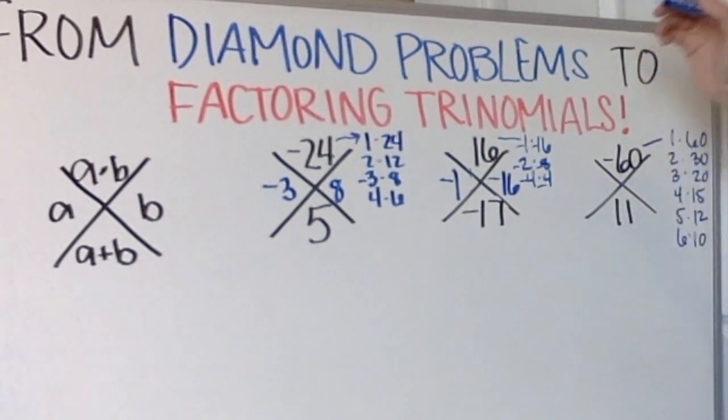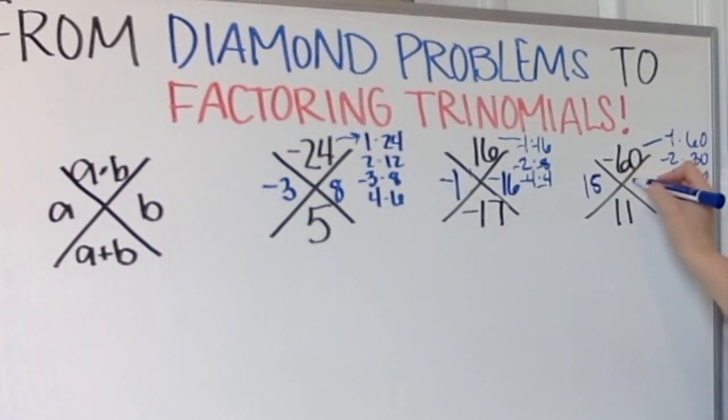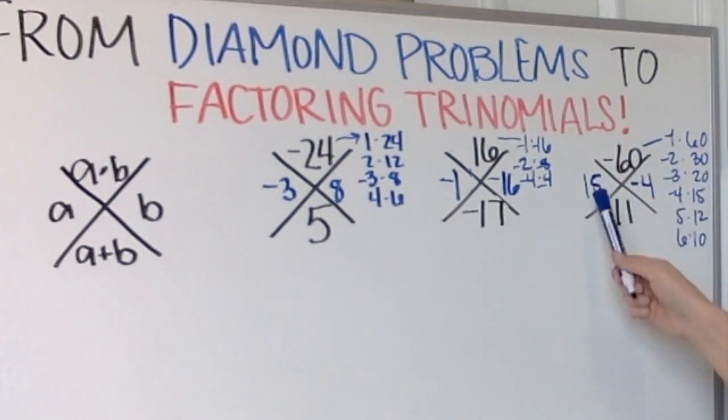All right, so if I did 60 minus 1 that's not going to get me 11. 30 minus 2, that's not going to get me 11. 20 minus 3, nope. 15 minus 4, that does get me 11. So I know 15 times a negative 4 would get me a negative 60. 15 plus a negative 4 would get me 11.